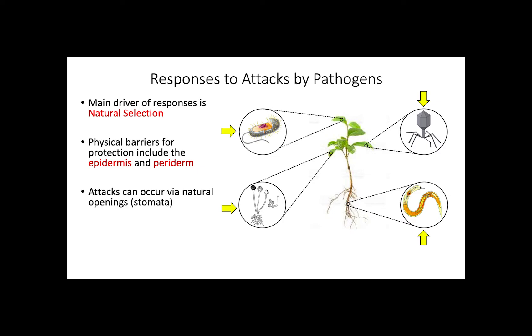Once the physical barriers are penetrated, the responses are triggered by the plant's immune system. Plants can either respond through PAMP-triggered immunity or through effector-triggered immunity, both of which are specific responses from pathogen attack.